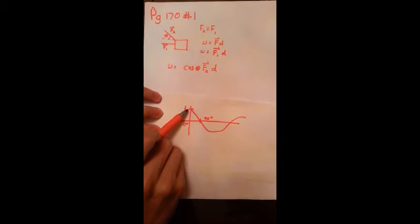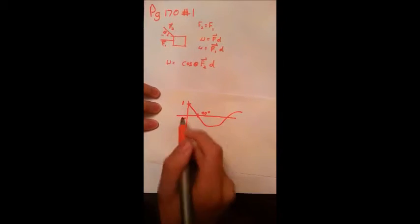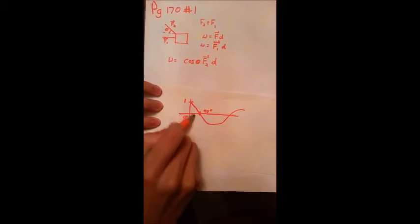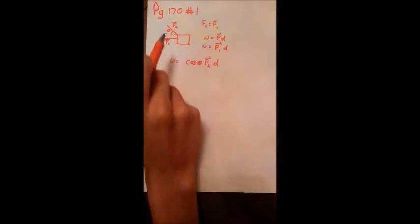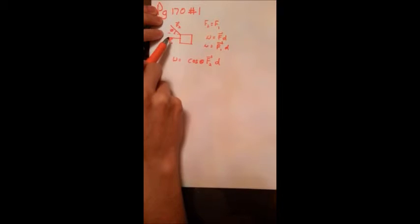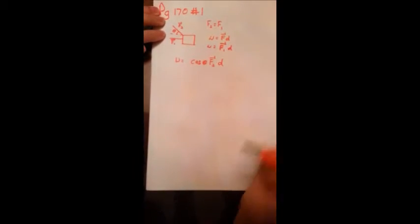As you can see from the cosine curve, anything greater than zero degrees is going to be less than one. So if we multiply anything less than one with the magnitude of the force, it's going to be less than the actual magnitude.